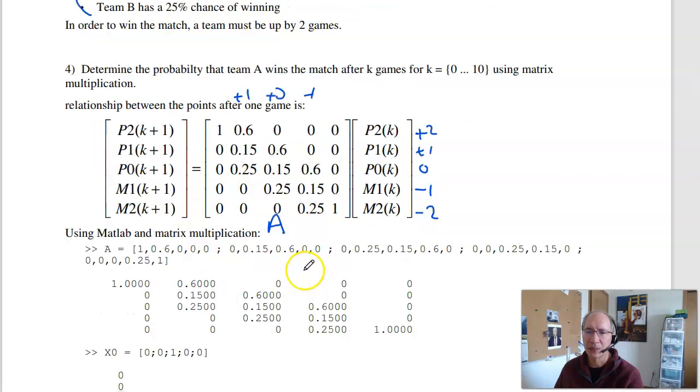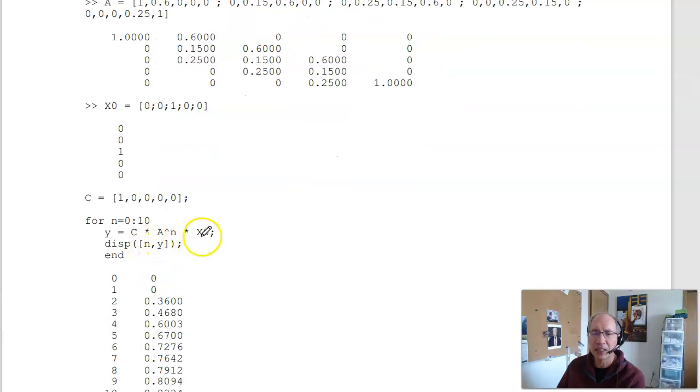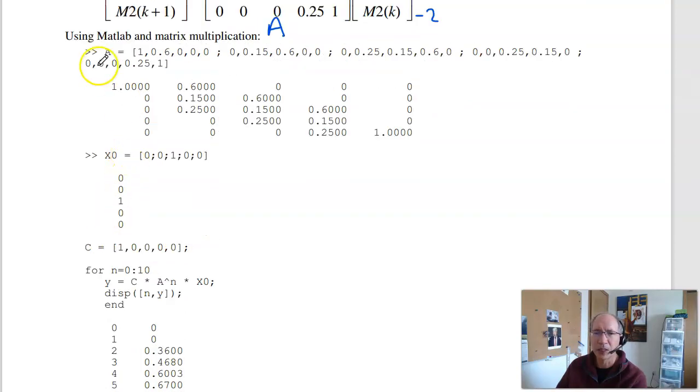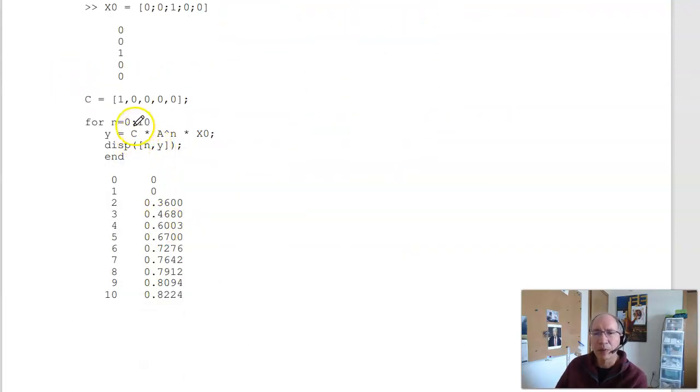So there's my state transition matrix. Let's call this A. Put that in MATLAB. If I start out at even, I can tell you the probability that A wins after N tosses. And that would just be your A to the N times X0 times C. So I want to pick off this state, plus two, meaning A wins. Repeat for N equals zero to 10. And what I wind up with is the probability that A wins after zero games is zero. One game is zero. You can't be up two after one game. Two games, three, four, five, six, seven, eight, nine, ten. So this is one way to solve the Markov chain. Just do matrix multiplication.